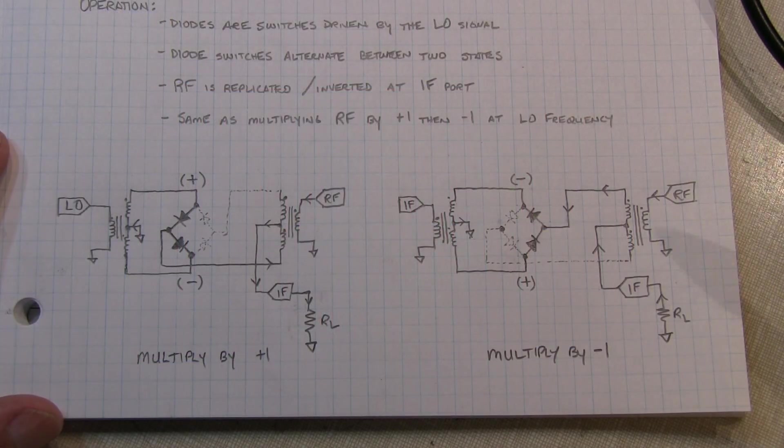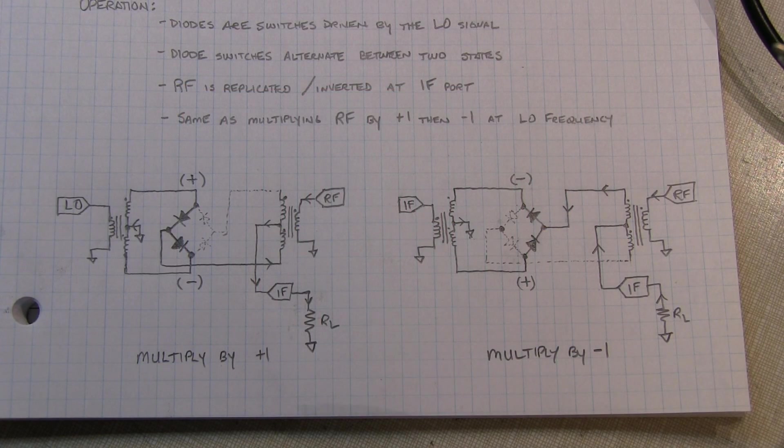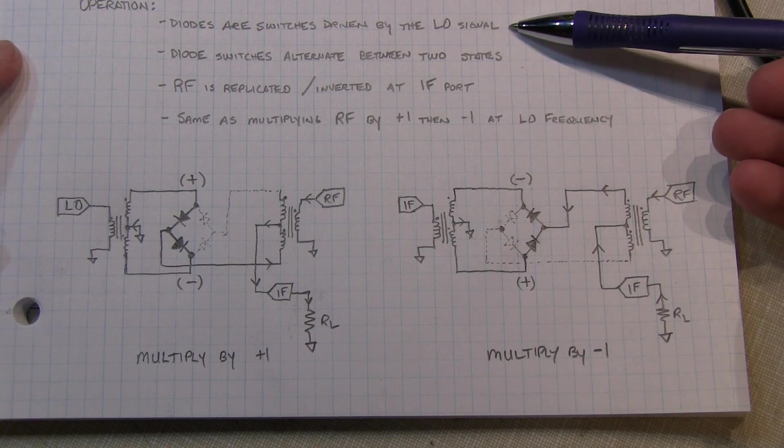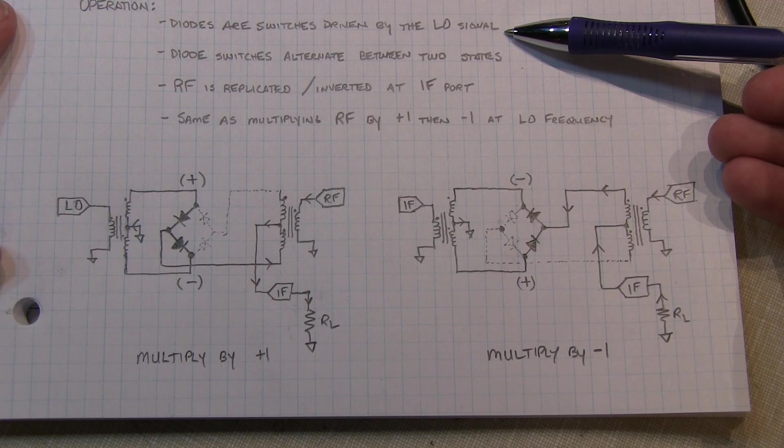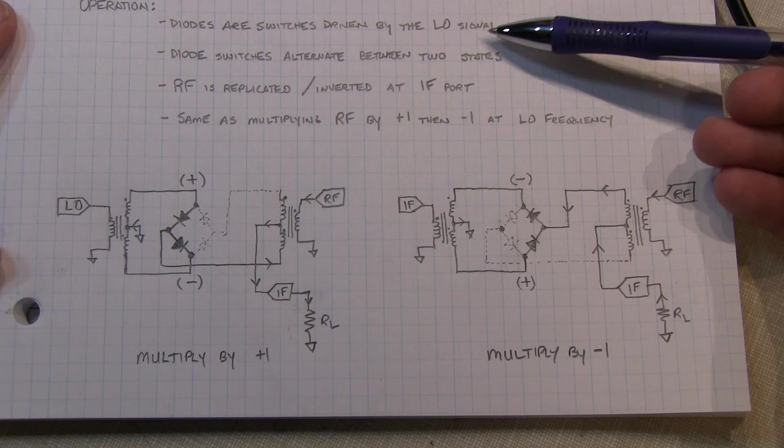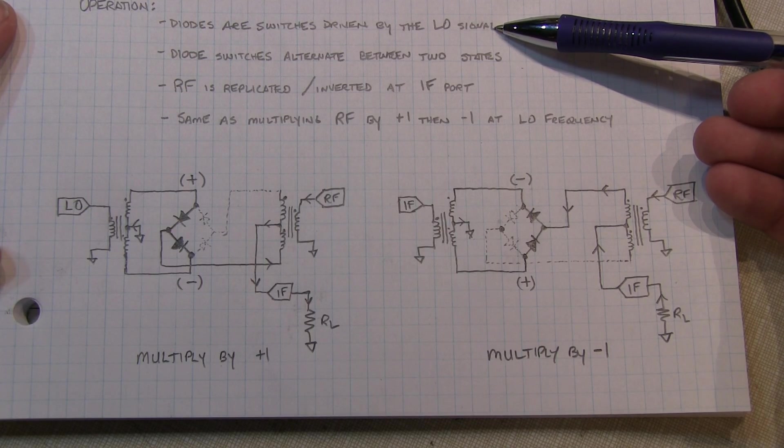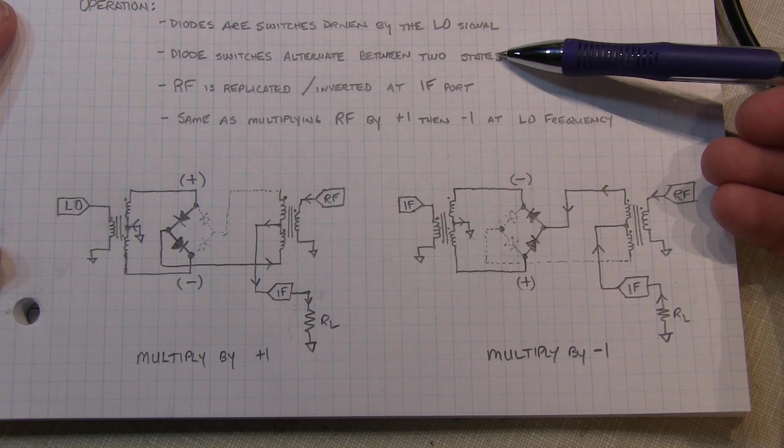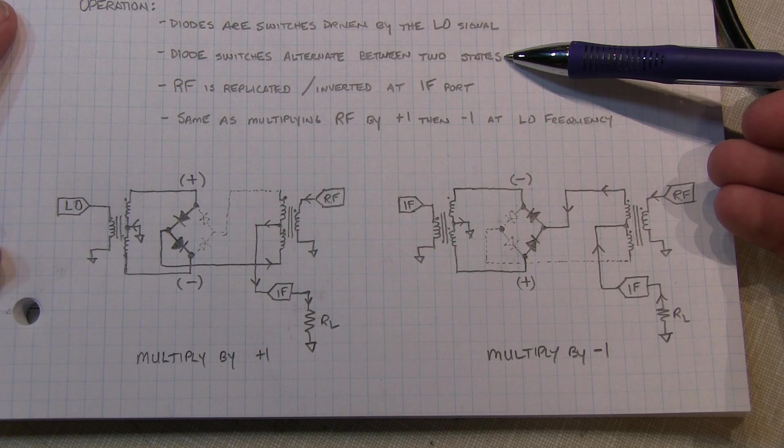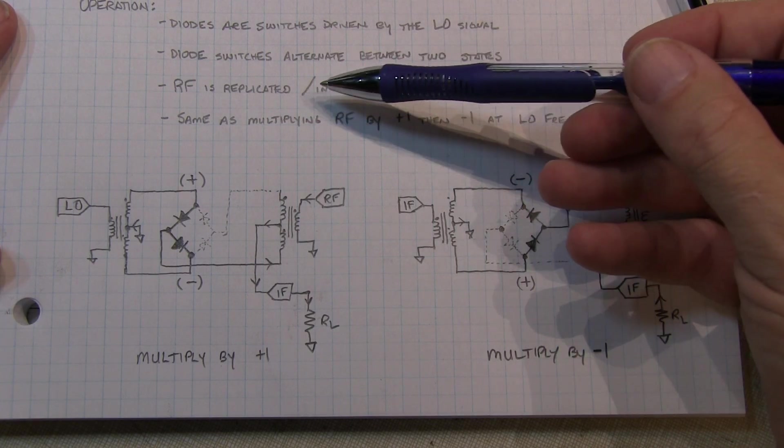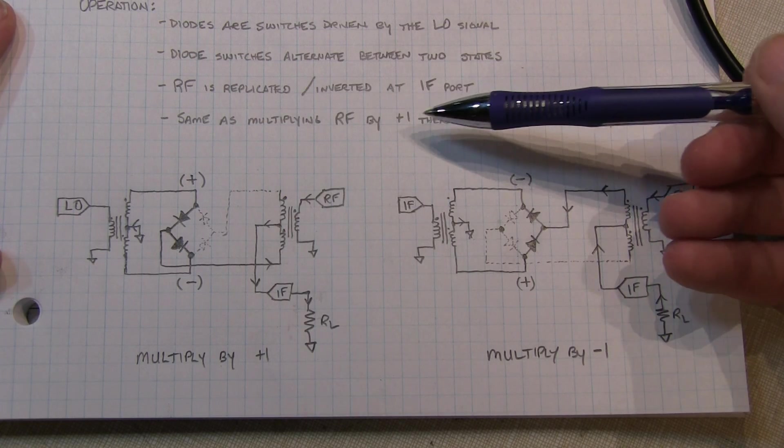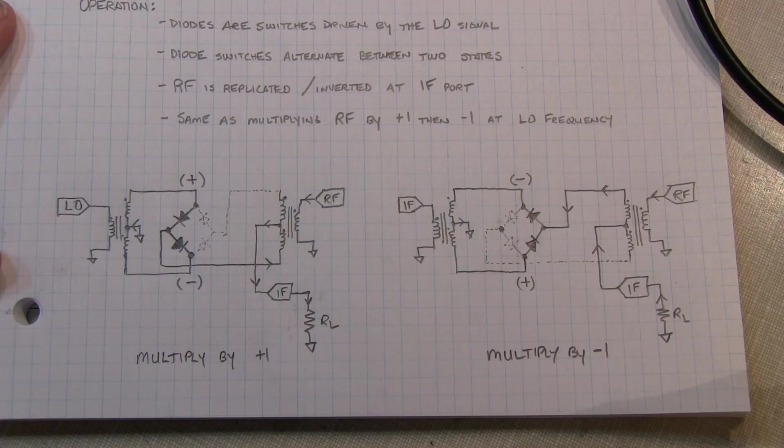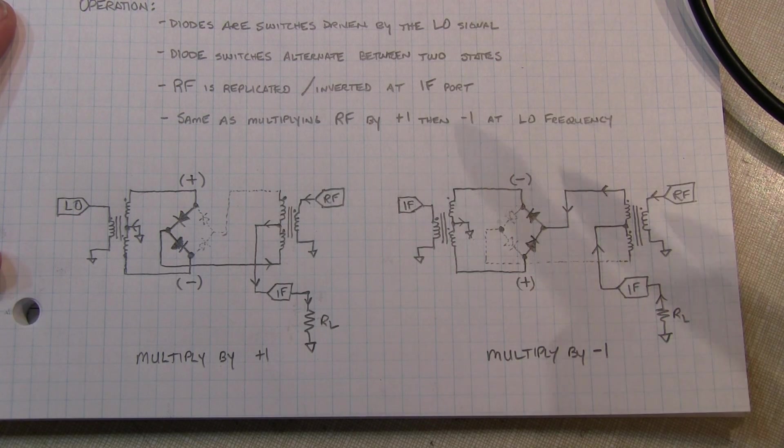So in the diode ring mixer the diodes act as switches and they're driven like switches. Now I've got a nice video that I put together a while back that talked about how to use diodes as switches and I'll link that video below so you can go review that. So the switches are driven by the local oscillator signal and the switches essentially alternate between two different paths or two different states in the mixer and the RF effectively is replicated or inverted at the IF port and it's basically multiplied by plus one or minus one at the LO rate or the LO frequency rate. And here's how it works.